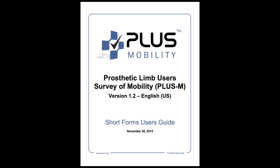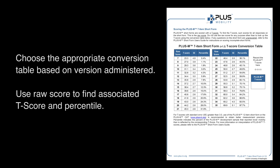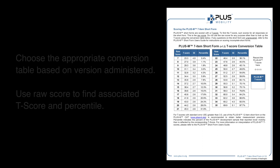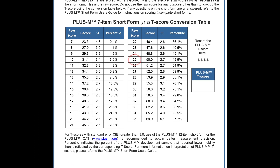CAT scoring is automated within the system. Choose the appropriate conversion table based on the version administered. Use the raw score to find the associated T-score and percentile. In our example, the raw score was 25; therefore, the associated T-score would be 50 and the percentile would be 49.9%.